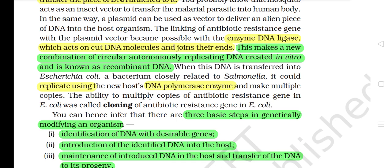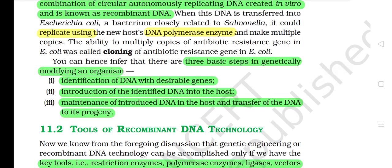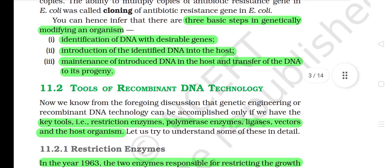The linking of antibiotic-resistant gene with the plasmid vector became possible with the enzyme DNA ligase, which acts on cut DNA molecules and joins their ends. This makes a new combination of circular autonomously replicating DNA created in vitro, known as recombinant DNA. When this DNA is transferred into Escherichia coli, a bacterium closely related to Salmonella, it could replicate using the new host's DNA polymerase enzyme and make multiple copies. The ability to multiply copies of antibiotic-resistant gene in E. coli was called cloning of antibiotic-resistant gene in E. coli. There are three basic steps in genetically modifying an organism: 1) Identification of DNA with desirable genes. 2) Introduction of the identified DNA into the host. 3) Maintenance of introduced DNA in the host and transfer of the DNA to its progeny.